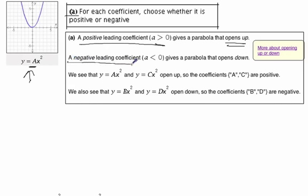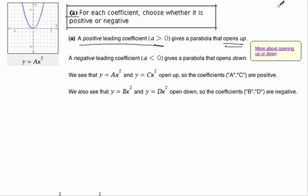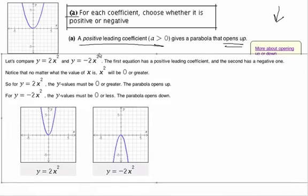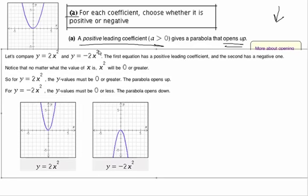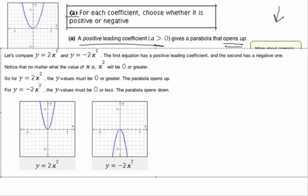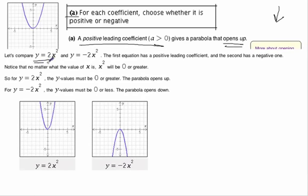A negative leading coefficient gives a parabola that opens down. So let's look a little bit more about opening up or down. Here we can take a look, and we've got some examples. So we're going to compare. If we have y equals 2x squared and y equals negative 2x squared, what does that look like?